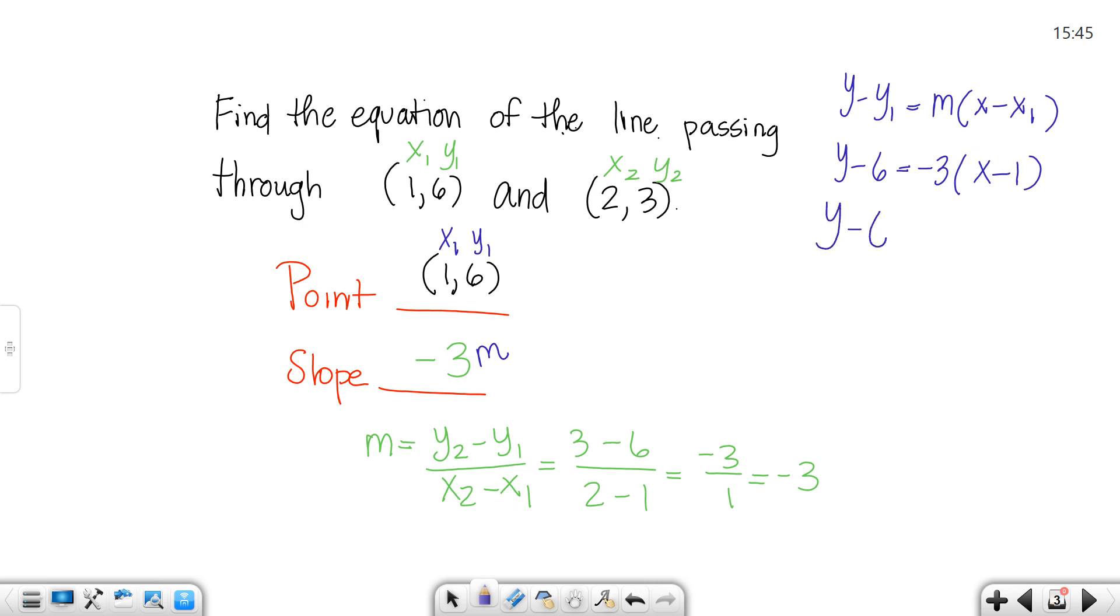So, y minus 6 equals negative 3x plus 3, because negative 3 times negative 1 would give you a positive result. I'll move the 6 over. And, y equals negative 3x plus 9. And that's your answer.